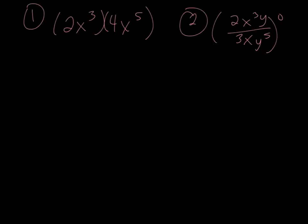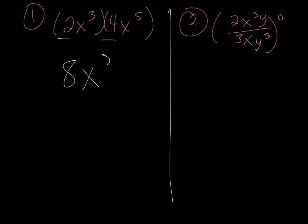Let's try a couple. Number 1: 2x to the third times 4x to the fifth. This is multiplying, so we first take our numbers — 2 times 4 is 8 — and then we put our x's together. X to the third times x to the fifth makes x to the eighth. Since we are not distributing an exponent, it's not a power to a power, so we just add our exponents.